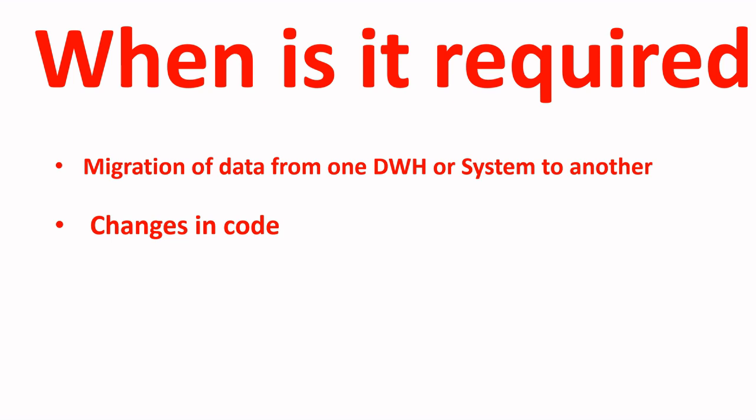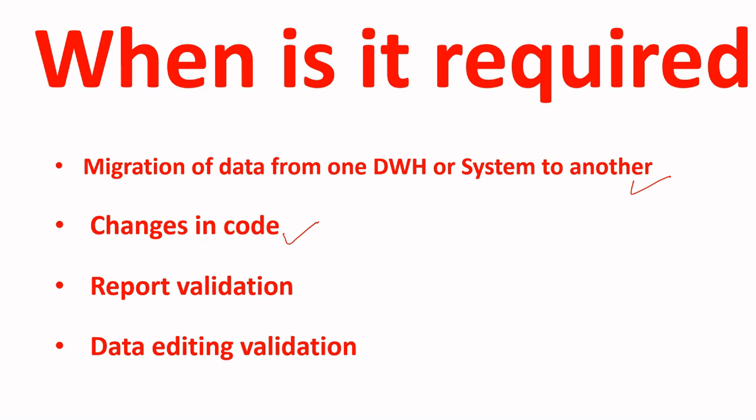Another use case is a change in code. For example, if you have some manual code and you want to automate it using macros, after automating you would like to see whether the output from the automated macro is the same as the older one. In that scenario, you can create a validation report. So these are the key reasons when we require to compare two tables — migration, code changes, and data modification.